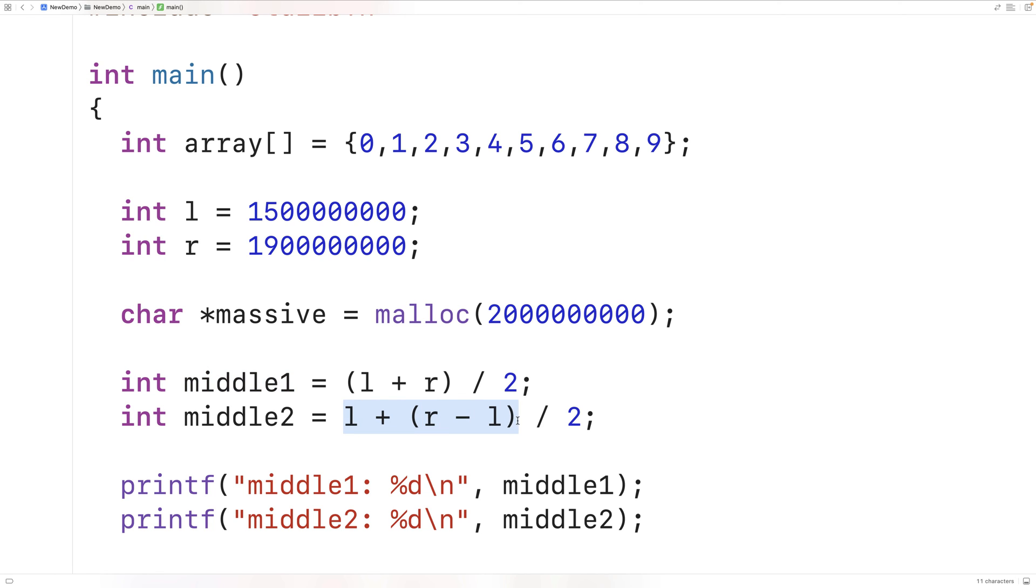We're going to take 1.9 billion and subtract 1.5 billion. That's going to give us 400 million. We're going to divide that by 2. That's going to give us 200 million. Then we're going to add to that 1.5 billion and we'll get 1.7 billion and we never have an integer overflow occur with the second approach.